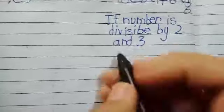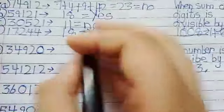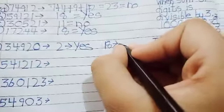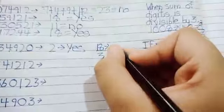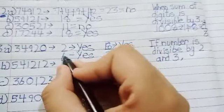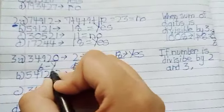Now the third question: we check divisibility by 6. The rule for divisibility by 6 is — if a number is divisible by both 2 and 3, it is divisible by 6. First we check divisibility by 2 — the last digit is 0, so yes. Then for 3: 3 + 4 + 9 + 2 = 18, and 18 ÷ 3 = 6, so yes divisible by 3. Since both conditions pass, the number is divisible by 6.